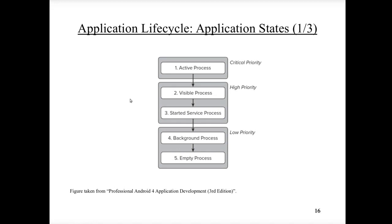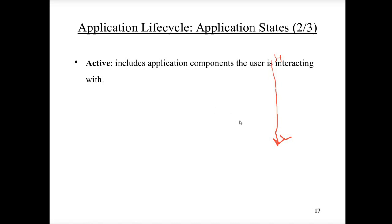Different processes can have different priorities for the application, ranging from high to low. At the highest priority are active processes — those application components the user is currently interacting with, visible on top of the screen. Visible processes are those activities not in the foreground but still affecting what the user sees on the screen, possibly behind another screen but still visible — these have the second highest priority.